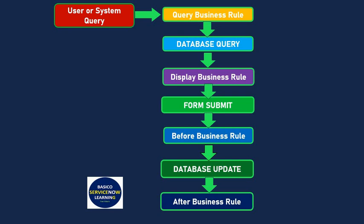There is one more business rule left: the async business rule. The async business rule gets executed after the after business rule — it runs asynchronously, as discussed earlier. This completes the execution order for business rules.